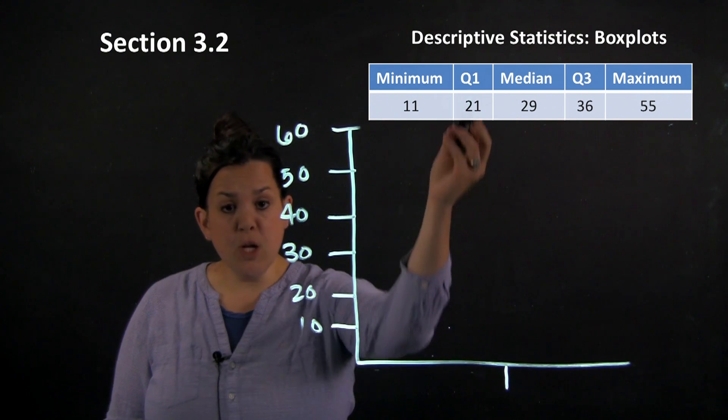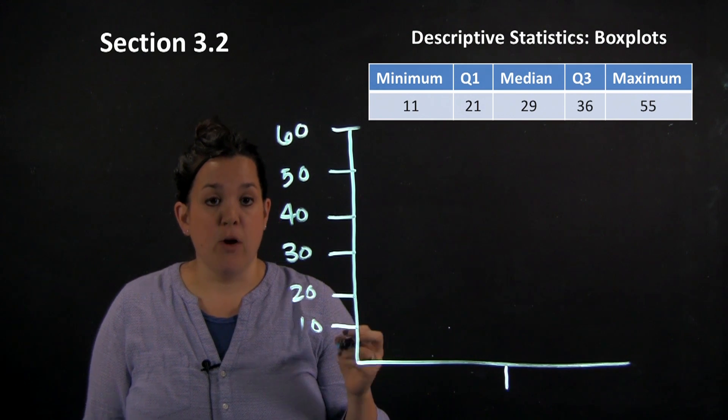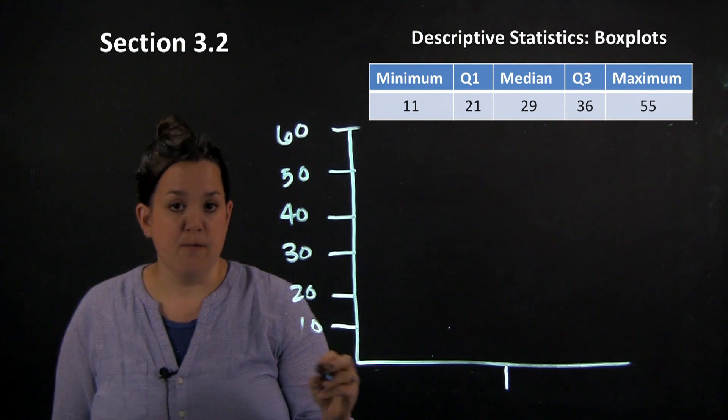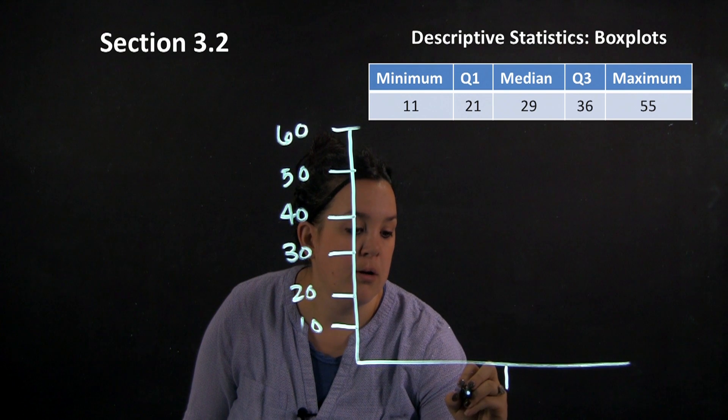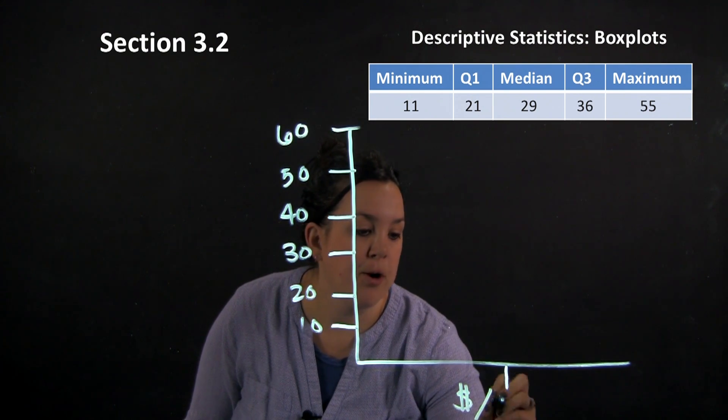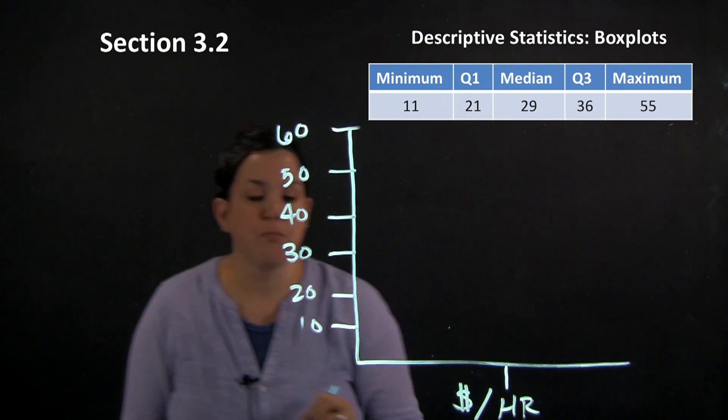So down here you would normally label what the variable is. So here let's say that the variable is dollars per hour. So if you're working at a job how much money you're making.